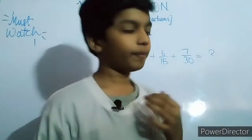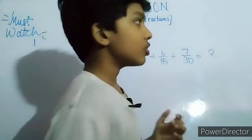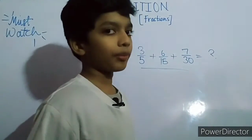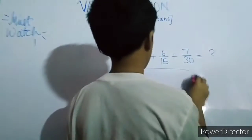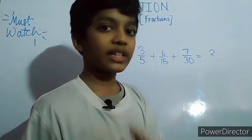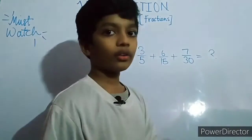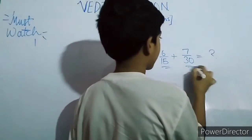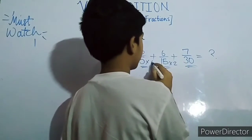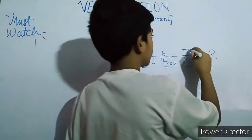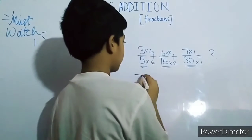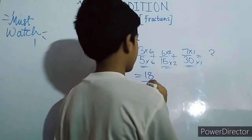Now what do you do here? Three by five, six by fifteen, seven by thirty. In our last case the denominators were same, but in this case our denominators are not same. So take out a common multiple — not the least common multiple as we do in normal addition, take out a common multiple. Here we can take thirty: five into six is thirty, fifteen into two is thirty, thirty into one is thirty. So multiply by six, two, and one respectively.